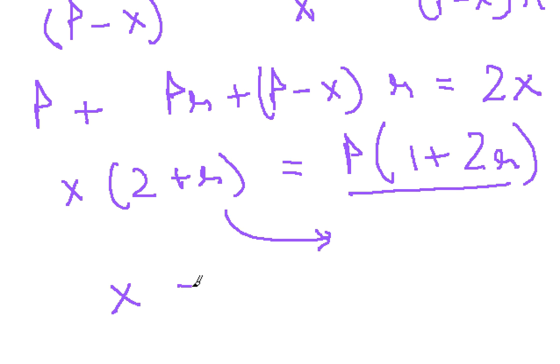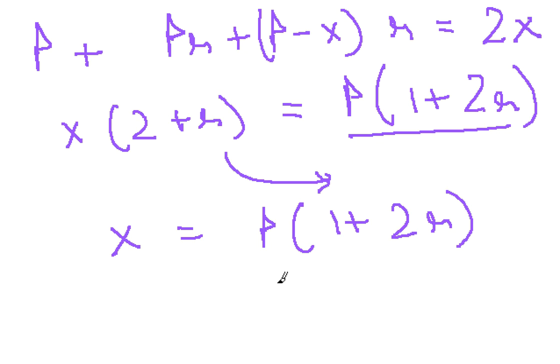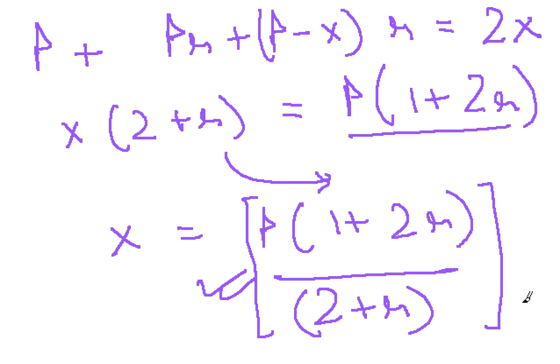So if you bring this down, we will get x equal to P times (1 + 2r) upon (2 + r). This is the expression for the required equal installments paid at the end of each of the two years.